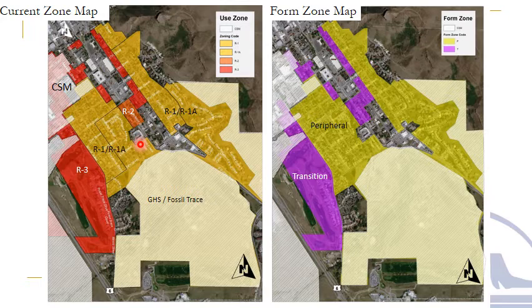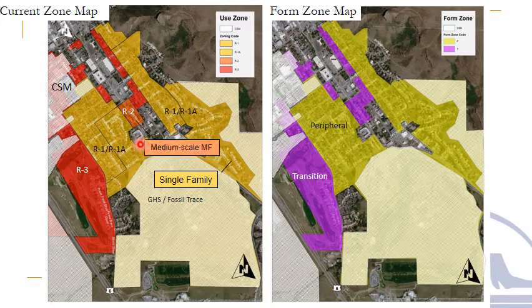Each of these zone districts has their own unique set of rules, but they are applied as a one-size-fits-all list of regulations to every property within their boundaries. R1 and R1A properties permit single-family uses and govern how to construct those single-family buildings. The R2 zone district permits medium-scale multifamily developments as well as single-family developments, with a corresponding list of regulations similar to R1. R3 permits large-scale multifamily and also has its own uniform list of standards.